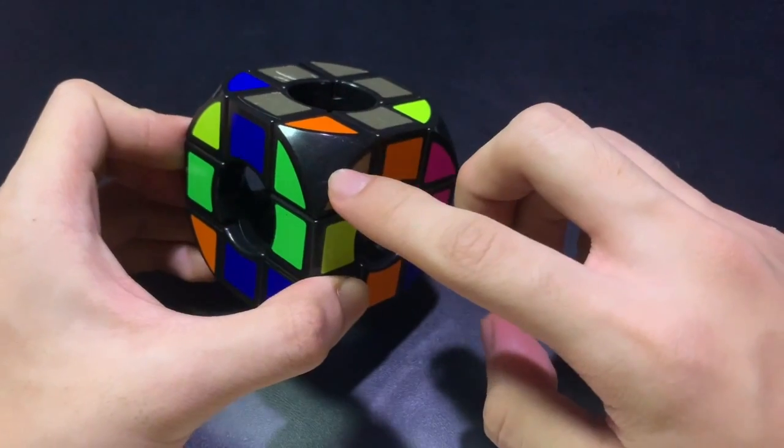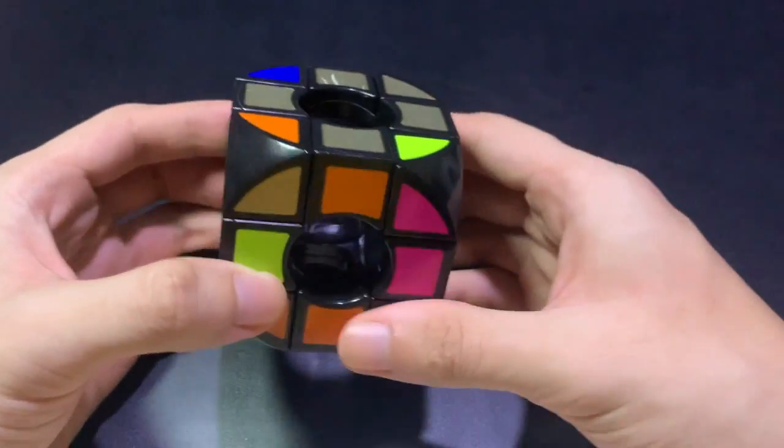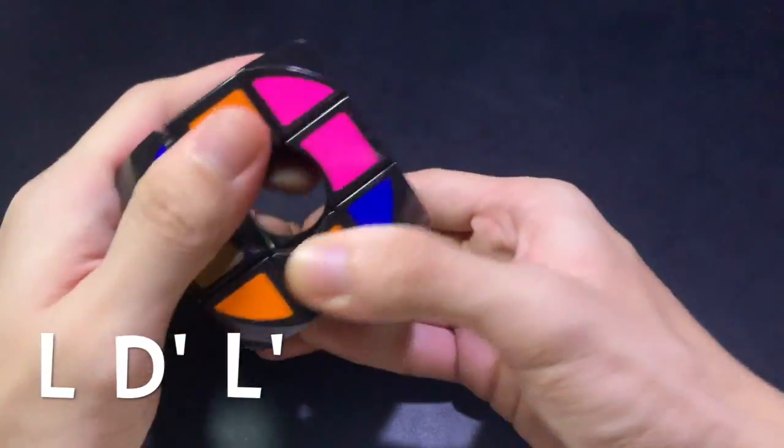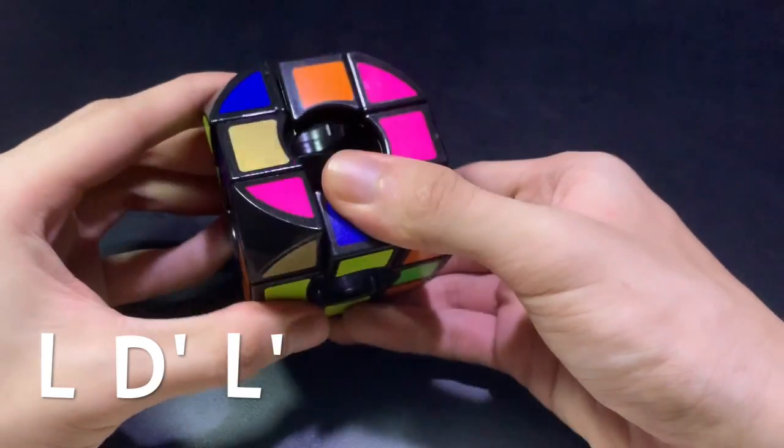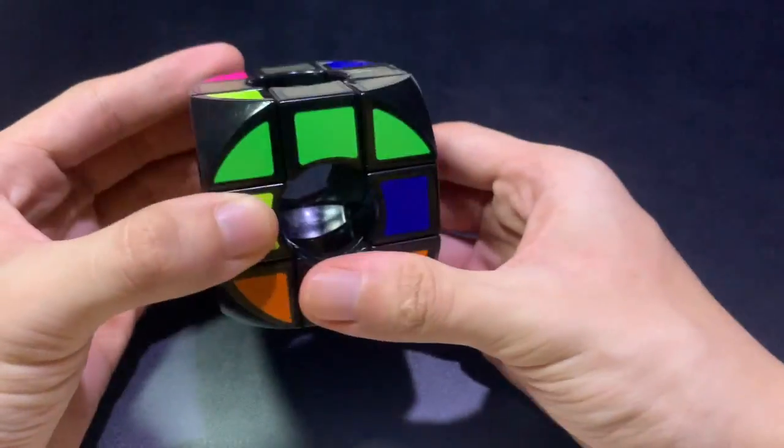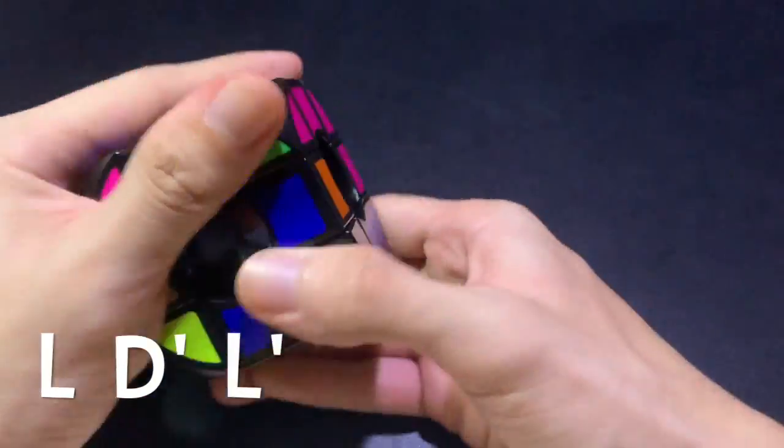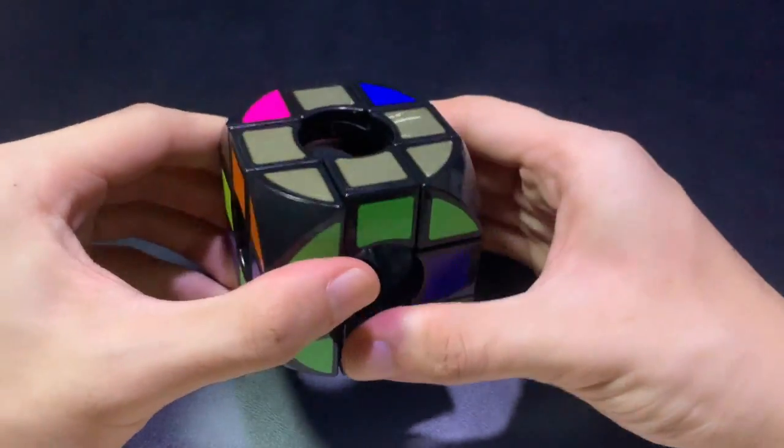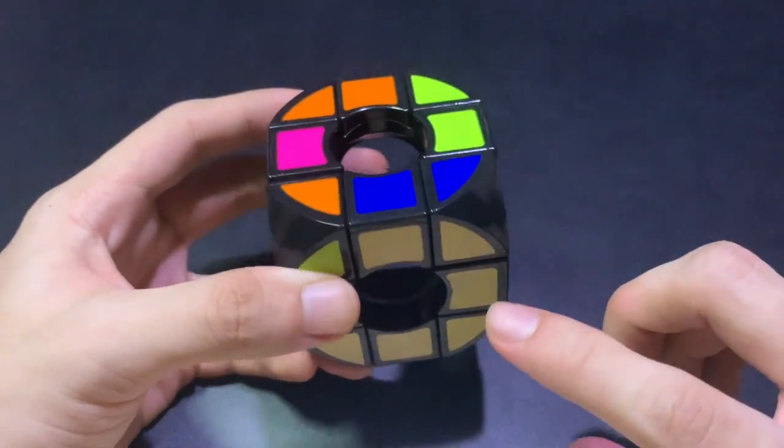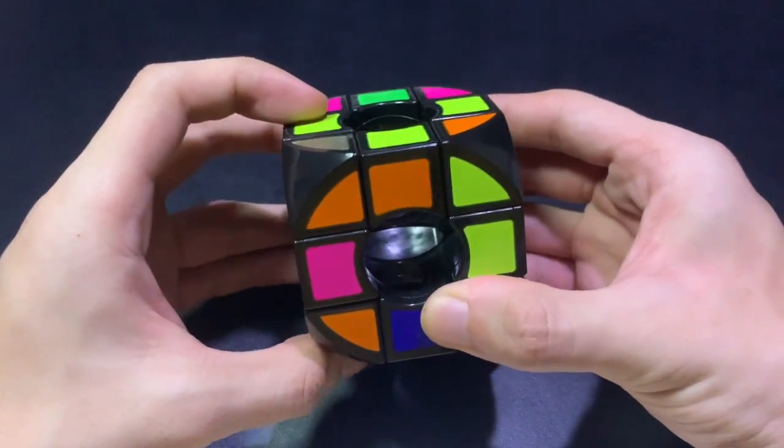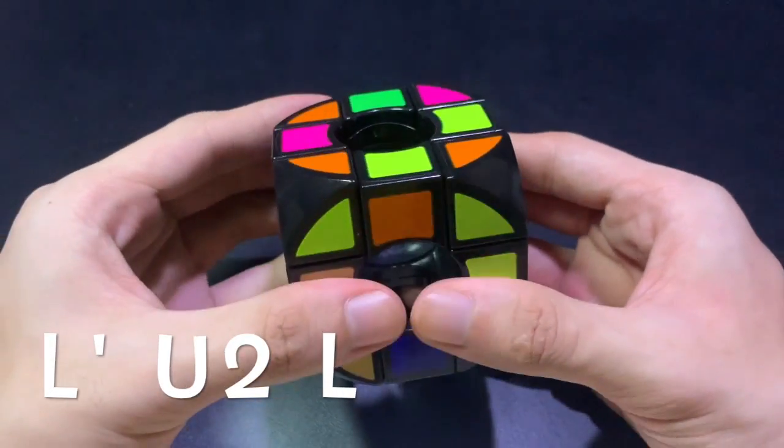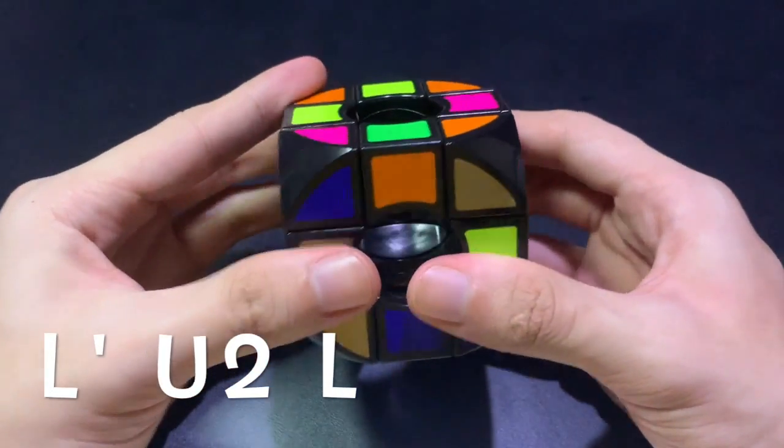So we have orange, gold, green here, and this needs to go here. So we need to put it down first. We can do l, d prime, and l prime again. Now it's back up. If your piece is opposite to the white side, what we can do is to put the white side on the bottom and do the following steps. If it's on the left, we can do l prime, u2, and l.